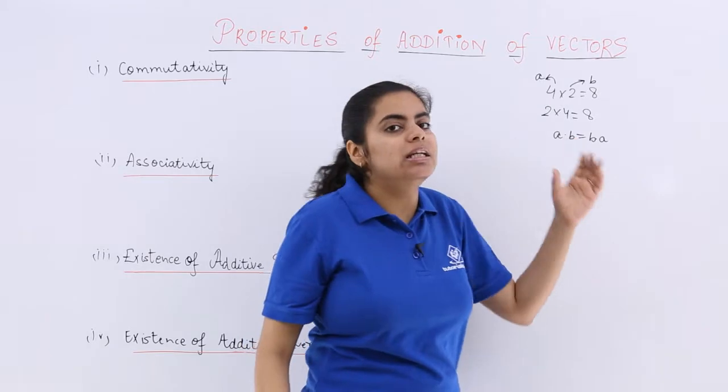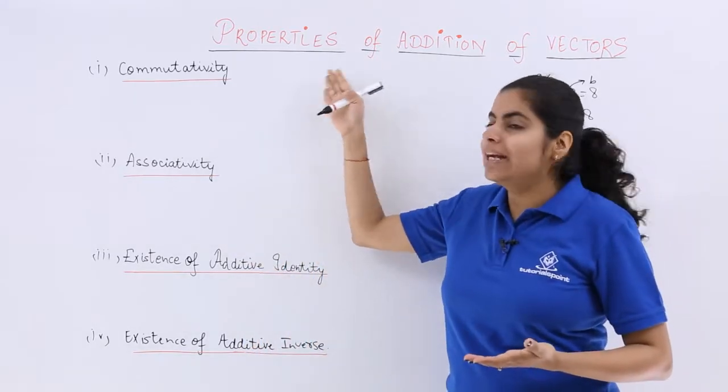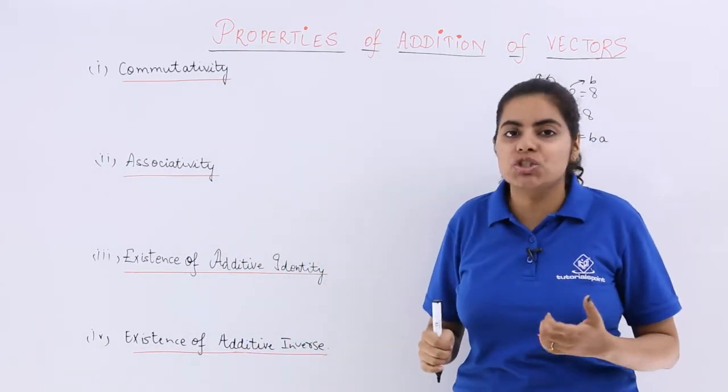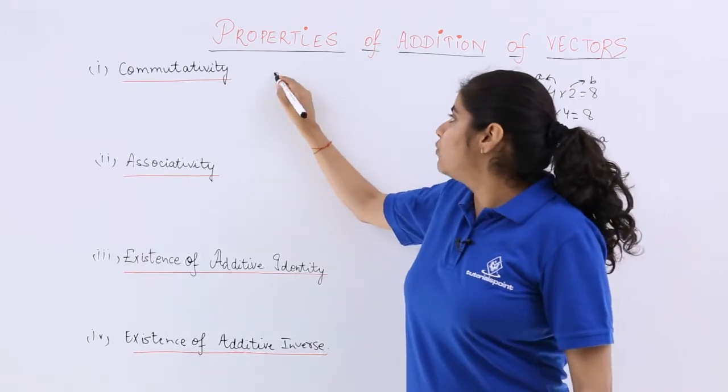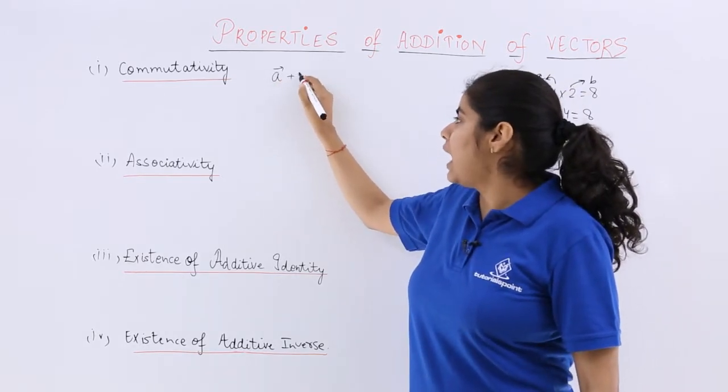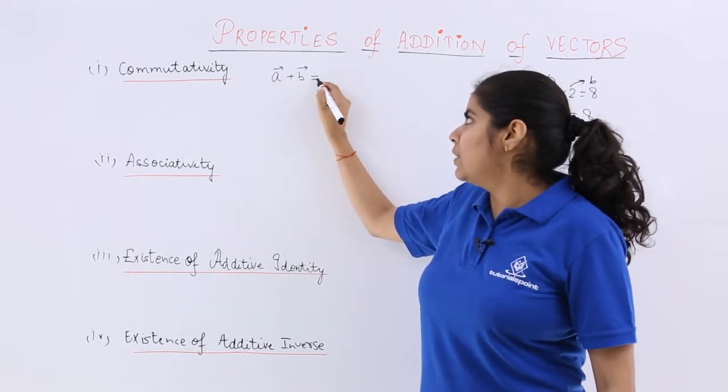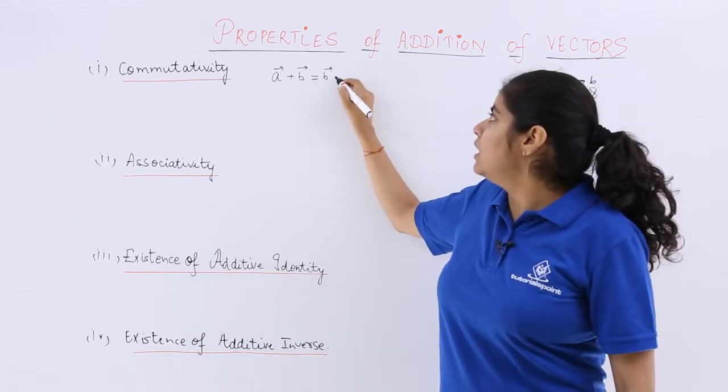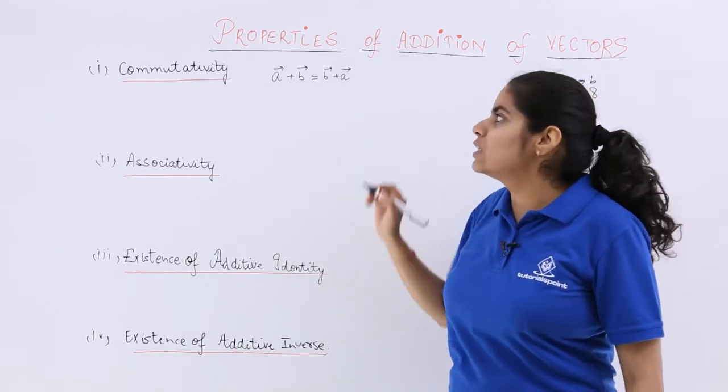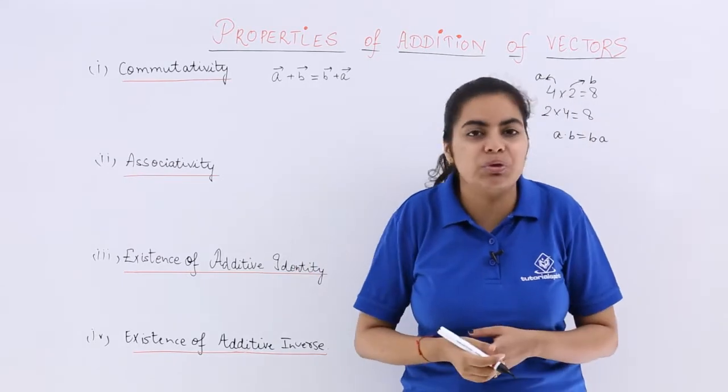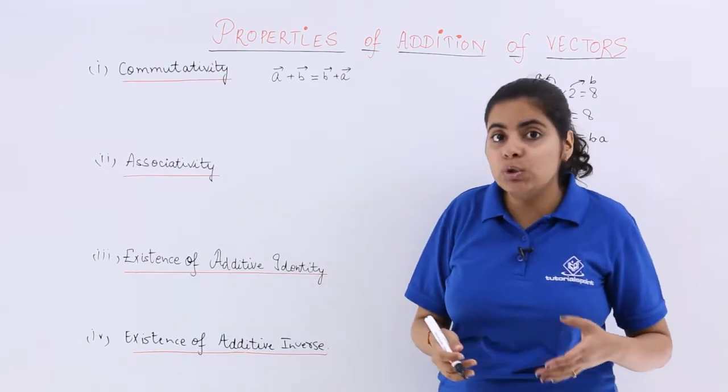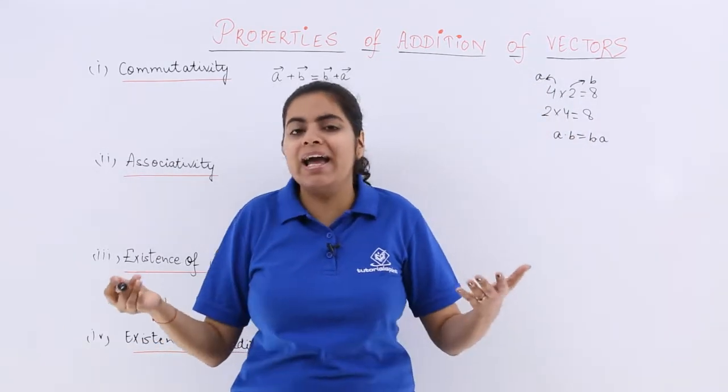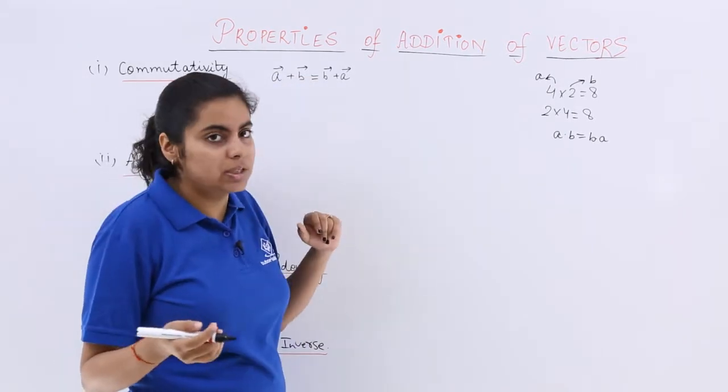Similarly, I talk about commutativity in the context of addition of 2 vectors. So if I have 2 vectors A and B, and if I add them, A plus B is equal to B plus A. That is your commutativity of addition of 2 vectors.